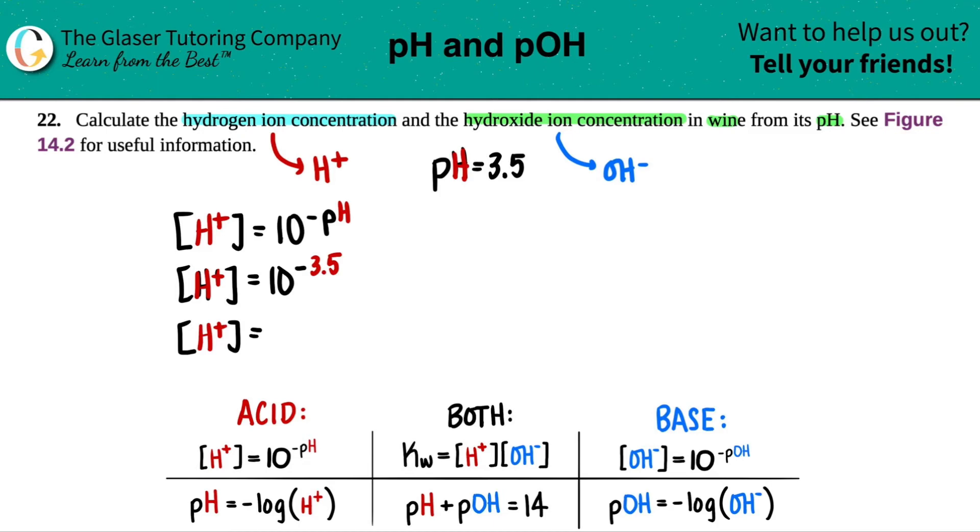So since there was one sig fig after, your whole value should only have one sig fig. So I can only say 3 times 10 to the negative 4th. And that's molarity. All right. So half of the equation is done.